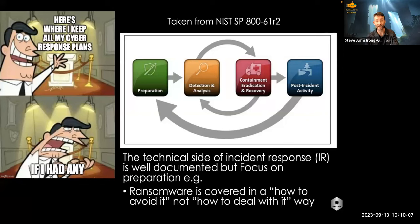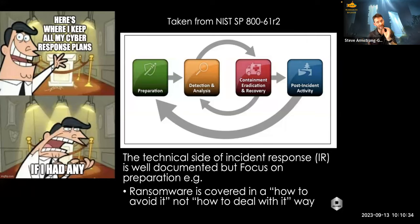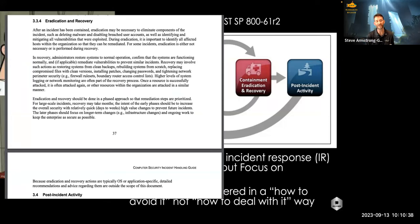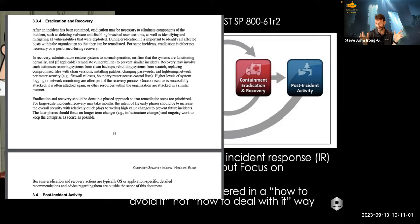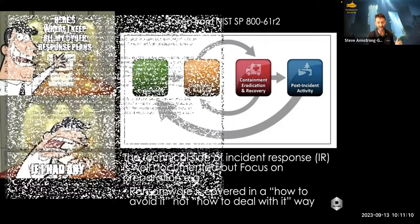If you've done the SANS 504 course, you'll recognize the key headings — preparation, identification, containment, eradication, recovery, and lessons learned, the PICERL process. The NIST standard is a vendor-neutral way of implementing that. However, it's very much oriented toward protection and prevention rather than cleanup. To illustrate: containment, eradication, and recovery — on page 37 out of 76 — there are only about four paragraphs on how to do eradication and recovery. And this is effectively the IR bible.